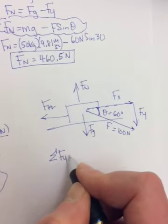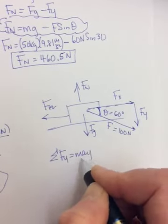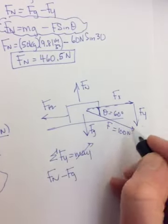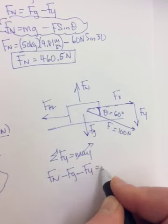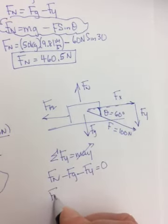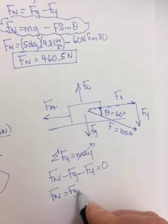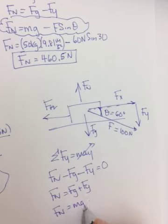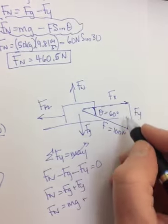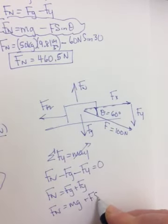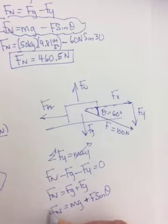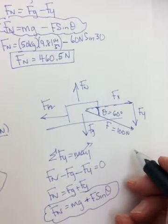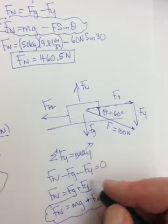This time, when you do the sum of the forces in the y direction, still going to be 0. But it will be fn minus fg. And this time, the fy is going down. So minus fy. Still looking for an expression for fn. So it will equal mg plus fy. What's mg? Fg, excuse me. It's mg. What's fy? It's the opposite side. So it should be f sine theta. So it looks very similar to the earlier one. Except up here it was minus because you were pulling up. Here it's plus because you're pushing down.